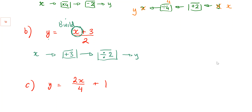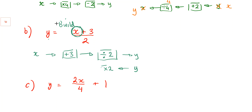Getting the order right is important — otherwise we'll get the wrong answer. We add 3 first, then divide by 2, and what comes out is y. To unbuild it: start with y, and the first thing to undo is the divide by 2, so we times by 2. Next, subtract 3. That comes out as x.